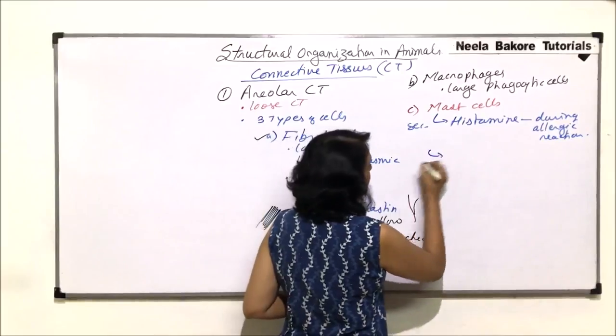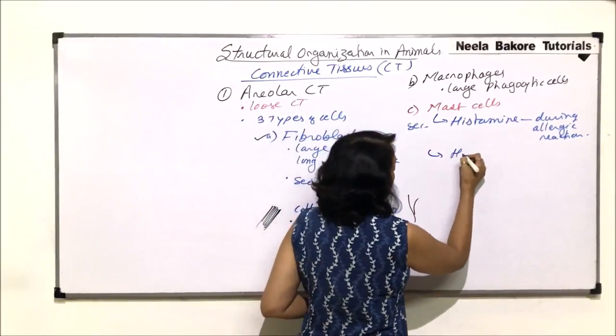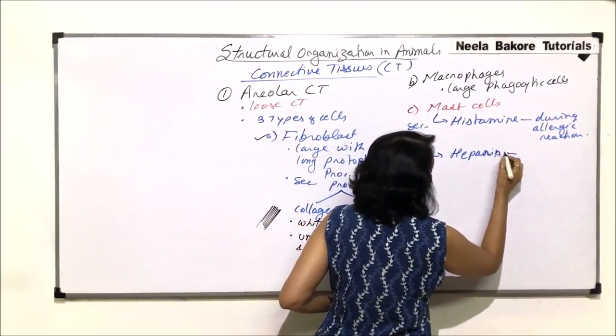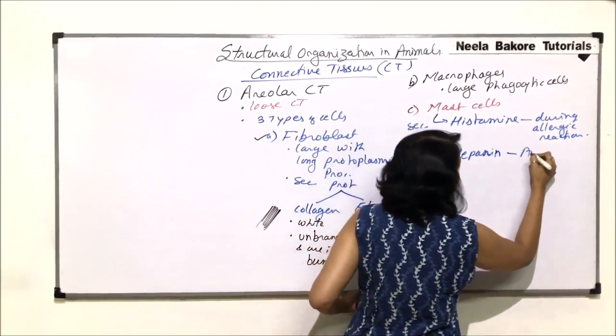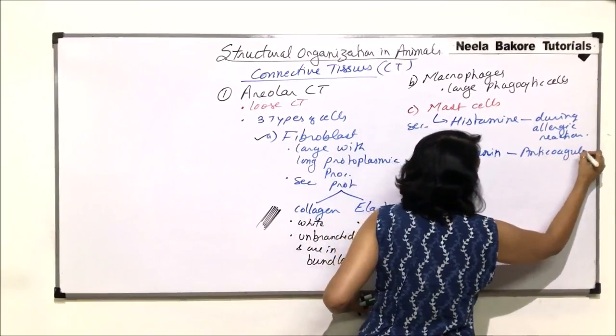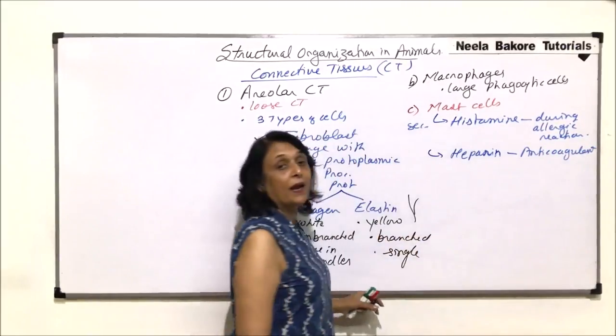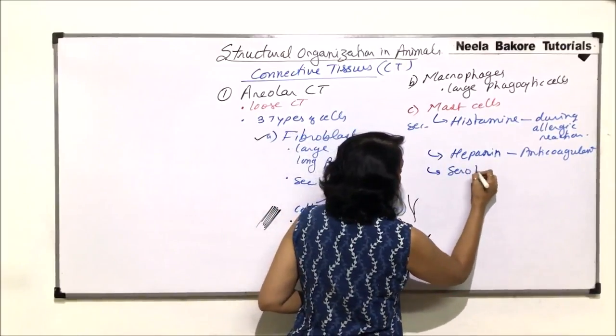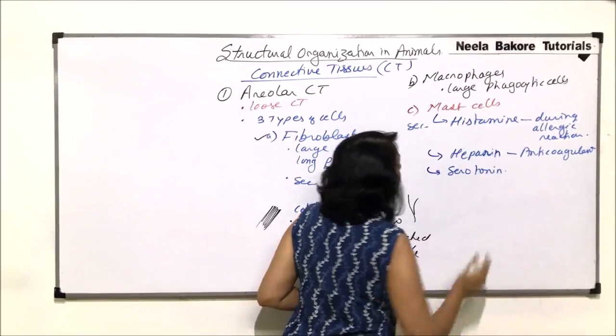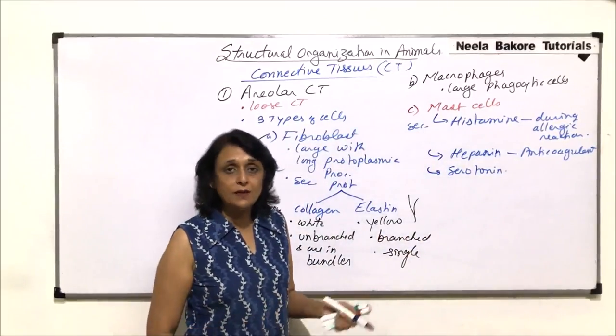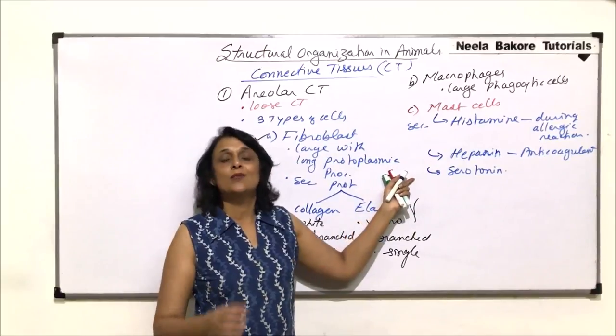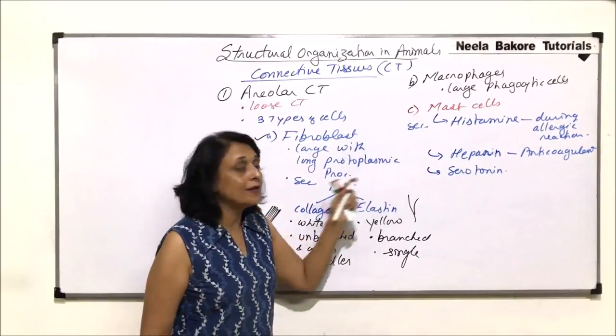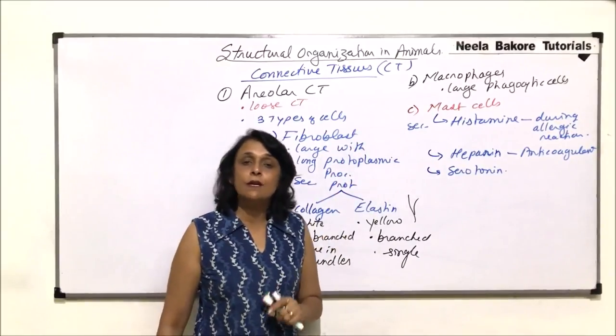The second substance which is secreted by mast cell is heparin. Heparin is the anticoagulant which is present in our blood. It doesn't let the blood clot. And third substance is serotonin. Now it is said that serotonin is stored in mast cells. And serotonin has various functions. Like it can be a neurotransmitter also.